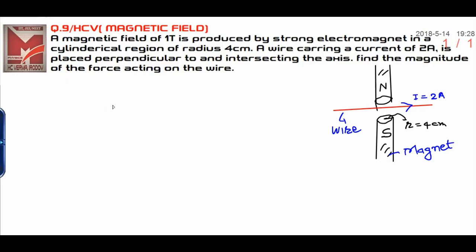In this question, there is a cylindrical magnet having north and south poles. In this cylindrical region, the radius of the magnet is 4 centimeters.